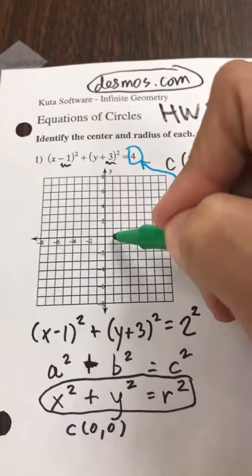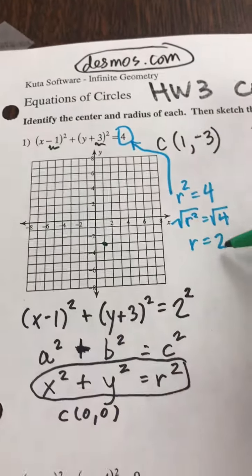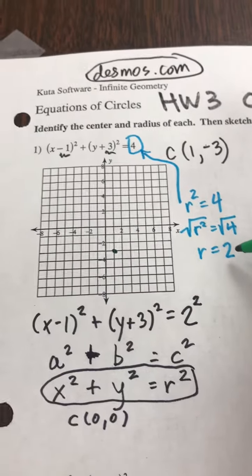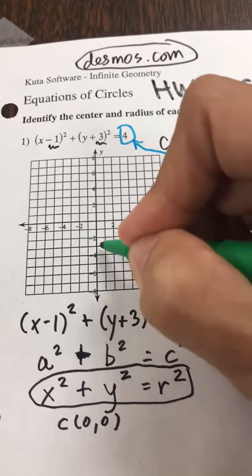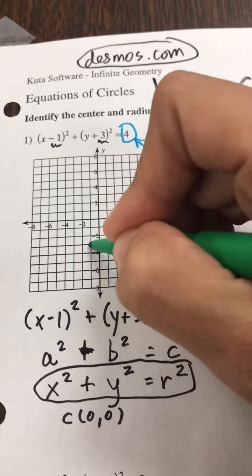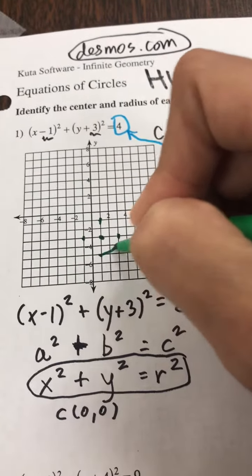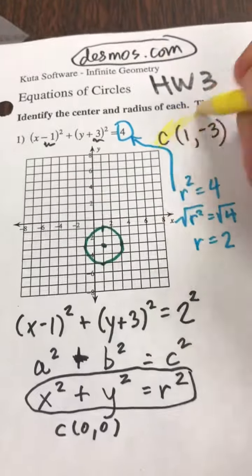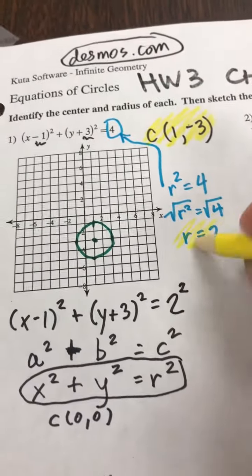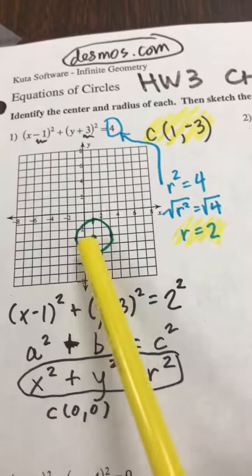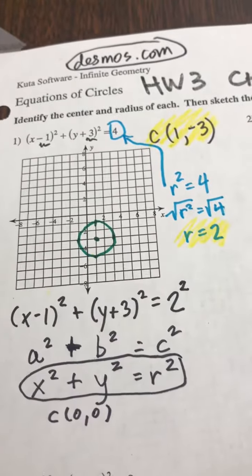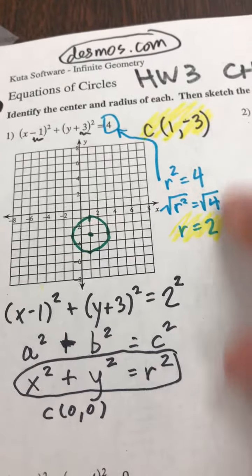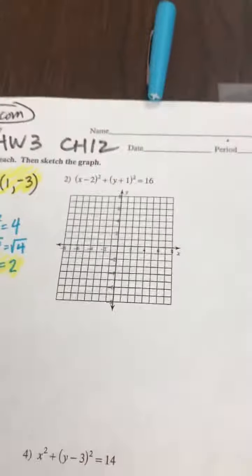So if the center is at 1, negative 3, and the radius is at 2, we can say that if the center is there, and we go 2 to the left, 2 to the right, 2 up, 2 down, that's where we would graph it. But make sure that you're showing your center and your radius. That's the part that I can grade. It's hard to kind of grade everyone's pictures. Everyone's pictures look a little weird, but make sure you're listing these two things.